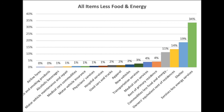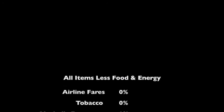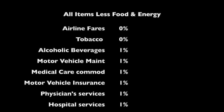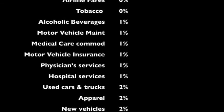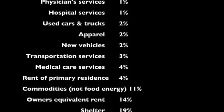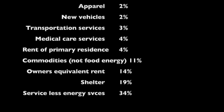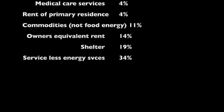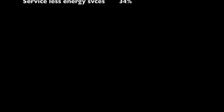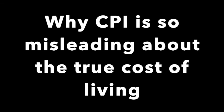Finally, let's look at the big bucket: all items less food and energy, which is about 79% of CPI. Let me present that data more clearly. Airline fares and tobacco are less than 1%. Alcoholic beverages, motor vehicle maintenance, medical care commodities, motor vehicle insurance, physician services, and hospital services all carry a 1% weighting. Used cars and trucks, apparel, and new vehicles carry a 2% weighting. Transportation services: 3%. Medical care services and rent of primary residence: both 4%. Commodities not related to food and energy: 11%. Owners' equivalent rent: 14%. Shelter: 19%. And services less energy services: 34%. In a later video I'll go deeper into why CPI is so misleading, but you probably have a good idea now.